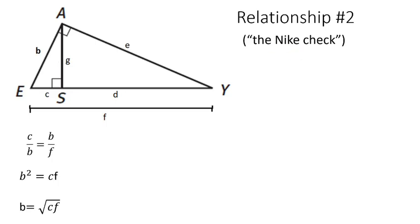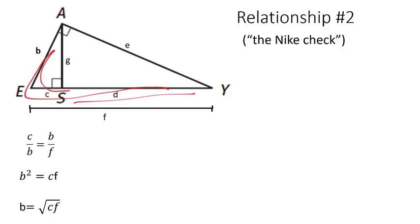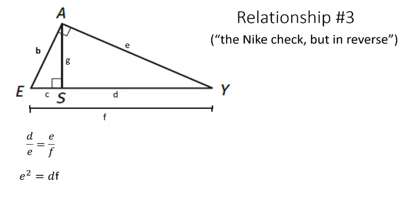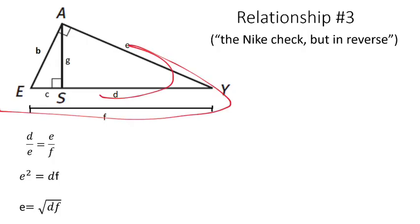I call it the Nike check because C over B equals B over F kind of looks like a Nike check — with F being the entire length across the bottom. Now let's look at our last relationship. Here we have D over E equals E over F — it's just a mirror of the Nike check. Instead of C over B equals B over F, we do D over E equals E over F. It's like a reverse Nike check. Once you have that, you can cross-multiply and take the square root of both sides.